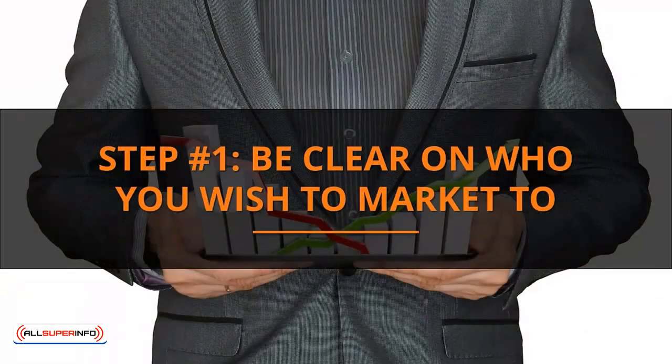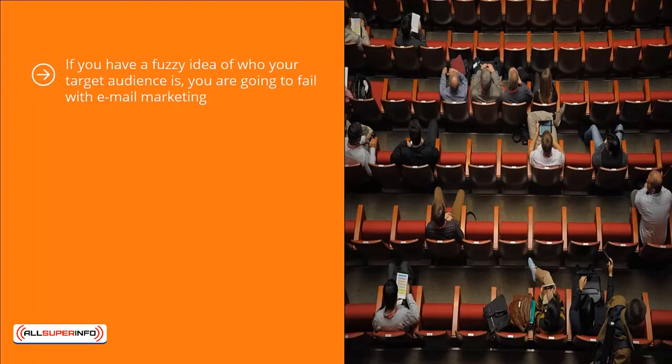Step number one: be clear on who you wish to market to. If you have a fuzzy idea of who your target audience is, you are going to fail with email marketing. You might as well give up now if you are chasing after some sort of vaguely defined market. Audience identification is crucial for niche list marketing. You cannot just target everybody. You have to drill down to a specific population of people who are trying to solve a fairly narrow set of problems.